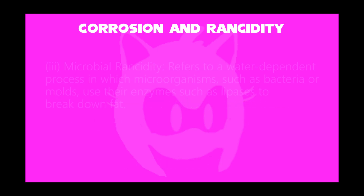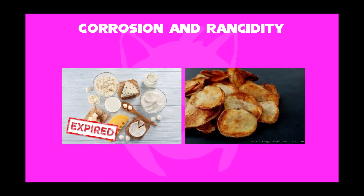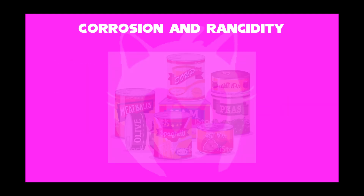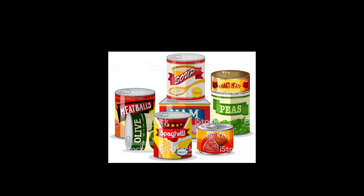Finally, microbial rancidity, which refers to a water-dependent process in which microorganisms such as bacteria or molds use their enzymes such as lipases to break down fats. Such as adulteration of food when the expiration date is reached. If you have a best-before 3-month food, you should consume it within 3 months and not beyond the limited duration. This causes rancid smell in foods like potato chips, baked potatoes, shell eggs, and others. In a food factory, food manufacturers add preservatives to extend the life of food products, such as canned foods.